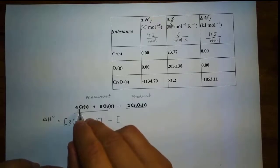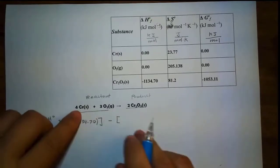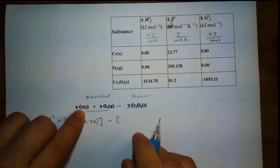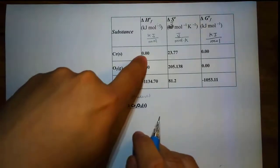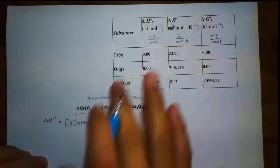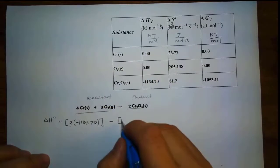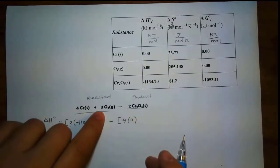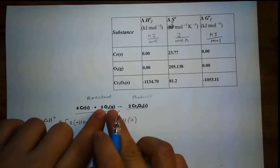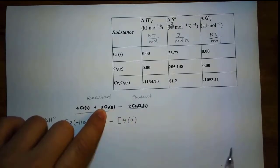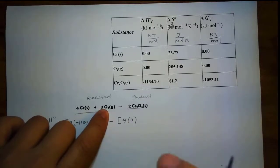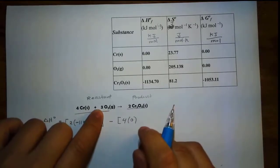We have 4 of Cr, and I know right away this must be equal to zero because it's an element. So here we have 4 times zero. And then we also have 3 oxygen — that's an element form, so it's equal to zero as well. We have oxygen there, which is a pure element, so it is zero.